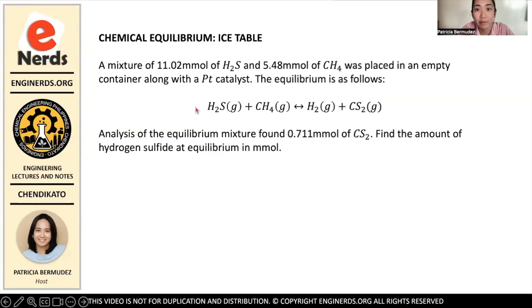Hi guys! Welcome back to Endurance YouTube channel. My name is Patricia Bermudez and I'll be your host for today's video. For today's video, we will be talking about the technique that is used to find the final number of moles or concentration in chemical reactions that have reached chemical equilibrium. So for this problem, it states that a mixture of 11.02 millimoles of hydrogen sulfide and 5.48 millimoles of methane was placed in an empty container along with a platinum catalyst. The equilibrium is as follows: hydrogen sulfide plus methane will produce hydrogen gas plus carbon disulfide. Analysis of the equilibrium mixture found 0.711 millimoles of carbon disulfide. Find the amount of hydrogen sulfide at equilibrium in millimoles.